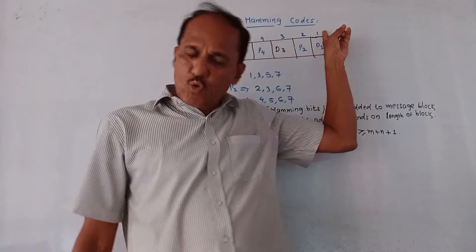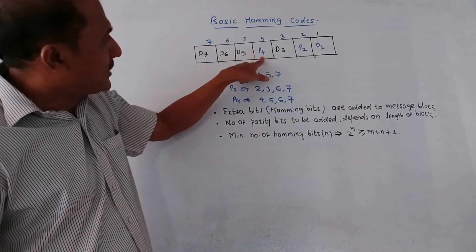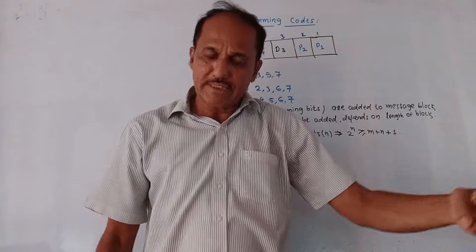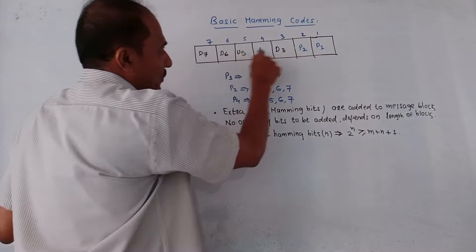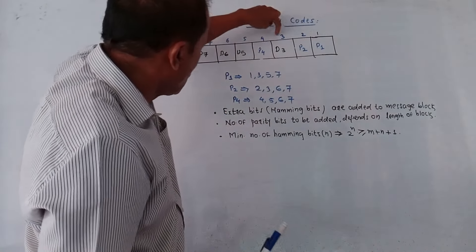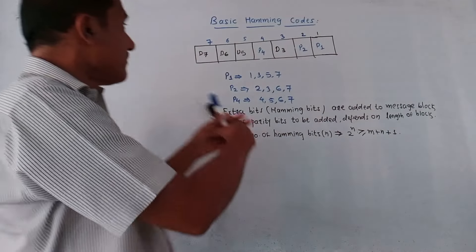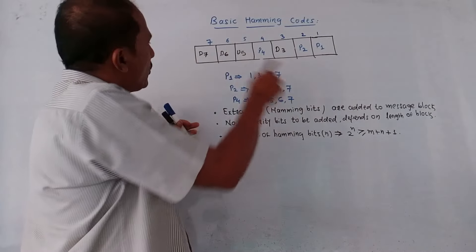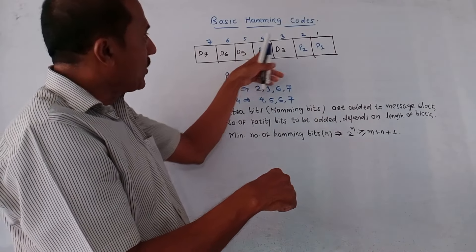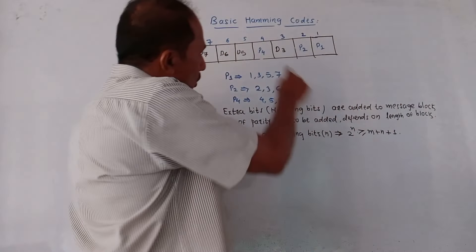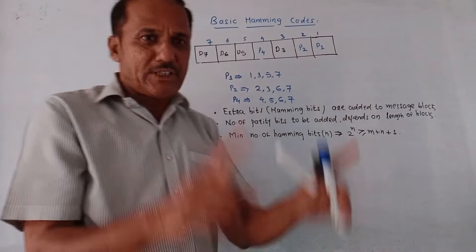Next, let us discuss basic Hamming codes. In the structure of Hamming codes, P represents parity bits — P1, P2, and P4 are parity bits inserted between the data bits. D7, D6, D5, and D3 represent data bits at positions 1 through 7. The 7-bit Hamming code is most popular and used in many applications. D represents data bits at the corresponding position, and P represents parity bits or check bits.